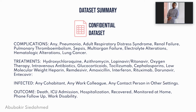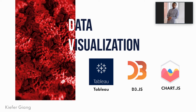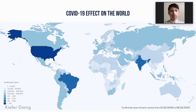I will now hand it over to my colleague Kiefer to talk about the data visualization we did using the first, second, and third datasets. I will be doing a recap of the data visualizations that we presented in the first semester. To make our visualizations, we used Tableau, D3.js, and Chart.js. Our visualizations from last semester were based on the first three datasets that Abubakar just showed us. From our visualizations, we concluded that COVID-19 can be deadly and can spread easily worldwide.